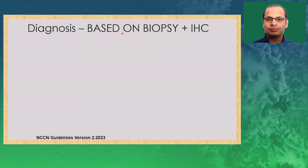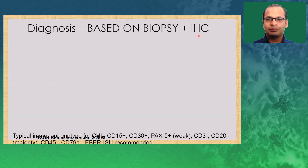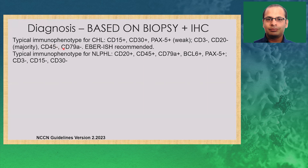Diagnosis is based on biopsy of the involved node and immunohistochemistry. The typical phenotype of a classical Hodgkin cell is CD15 positive in most cases, CD30 around 70% of cases, PAX5 is dim positive, negative for B and T cell markers, and EBER is usually recommended and positive. For NLPHL, these are characteristically B cell markers: CD20, CD45, and CD79a are positive, BCL6 and PAX5 are positive, while CD15 and CD30 are negative in most cases.